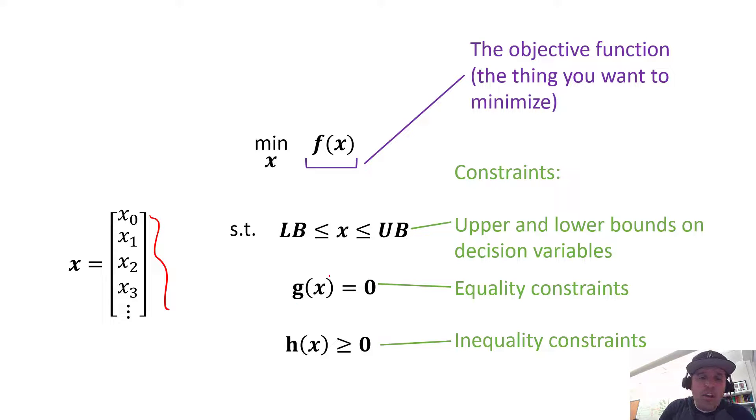You can also have equality constraints built into your system, and inequality constraints. So you can say x₁ + x₂ = 4, or you can say x₁ + x₂ ≥ 0. Again, we're going to get to some practical problems shortly.